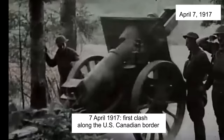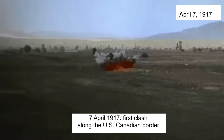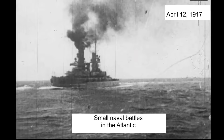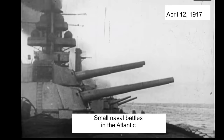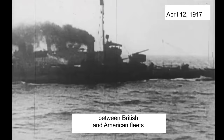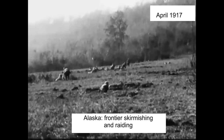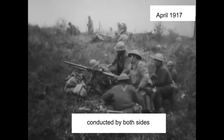April 7, 1917: the first clash along the USA-Canadian border. The USA 26th Infantry Division attacks Pembina. Small naval battles in the Atlantic between British and American fleets. USA destroyer Fanning is sunk off the Newfoundland coast. In Alaska, frontier skirmishing and raiding is conducted by both sides. English ships shell coastal cities on the east coast of the United States.